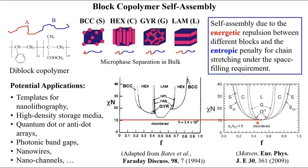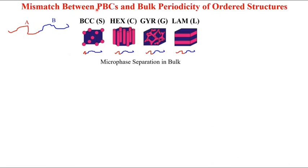A problem exists, however, in all molecular simulations of spatially periodic structures, such as those formed by block copolymers. That is, the periodic boundary conditions of the simulation box may not match the bulk periodicity of the structure, which is usually not known before the simulation. And this mismatch will change the structure and even its stability obtained in the simulations.